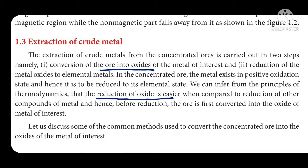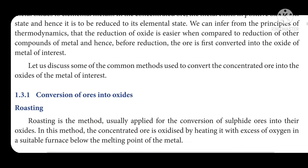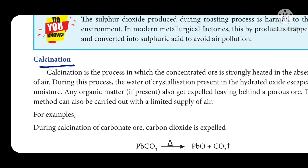In the second step — extraction of crude metal — the first sub-step is conversion of ore into metal oxide. Two methods are given for this conversion: the first method is roasting, and the second method is calcination. We are going to learn roasting first.